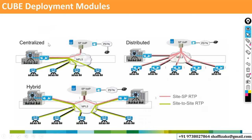CUBE deployment modules: one is centralized, one is distributed, and another is hybrid. Centralized means — this is my headquarters and this is my branch office. When a call is made from the branch office, it first goes to the headquarters. At headquarters we have the CUBE router, and from this CUBE router the call goes outside. We are not taking any PSTN or ITSP connection directly to the branch office.